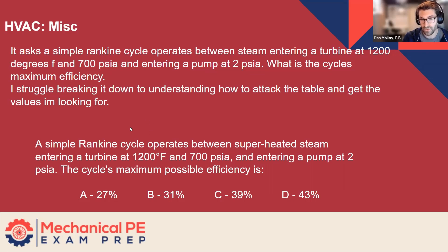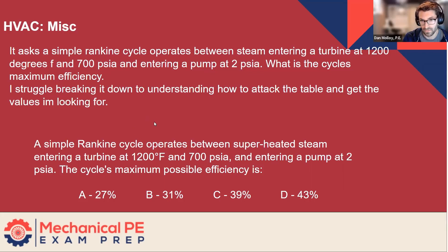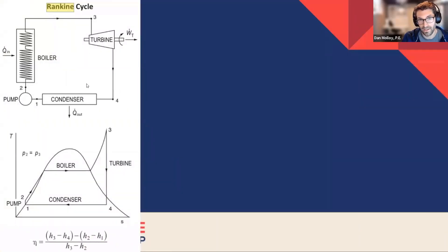The first thing you want to do is search Rankine cycle in the reference handbook. When you do that, you'll get this information, which is really helpful. We have a schematic view of a Rankine cycle. It's easy to forget what these cycles are if you don't use them all the time. So you get that reminder straight away, and then we have a drawing of the Rankine cycle on a temperature and entropy curve.